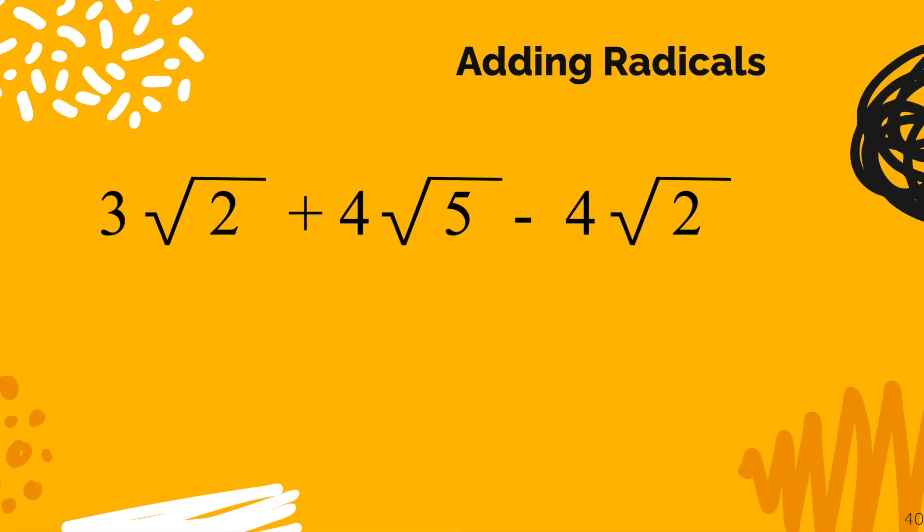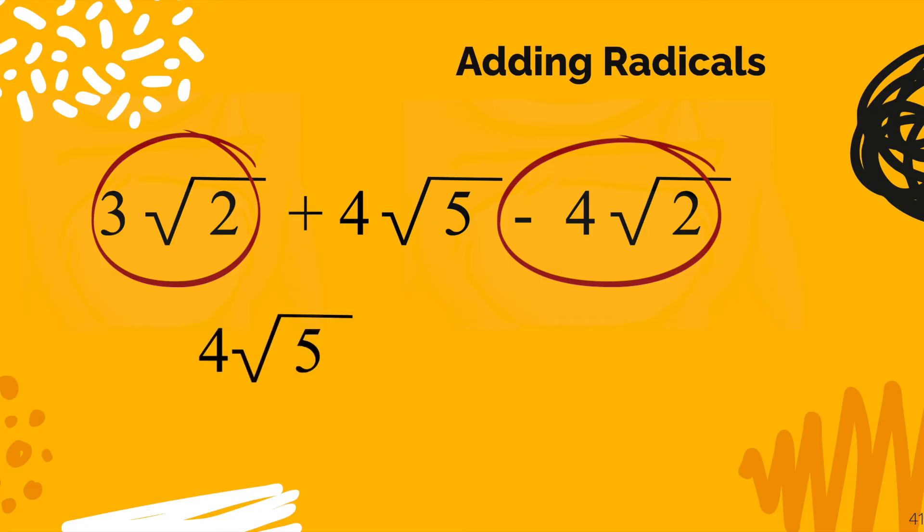Let's add and subtract a few different terms. Here we have 3 radical 2 plus 4 radical 5 minus 4 radical 2. Scan through that. We have 3 terms and 2 of them are what I would call like terms. They are radical 2's.